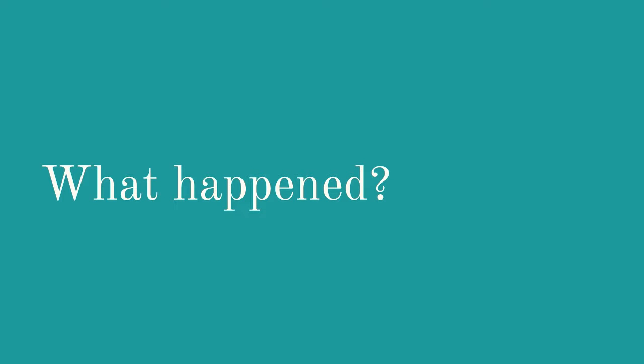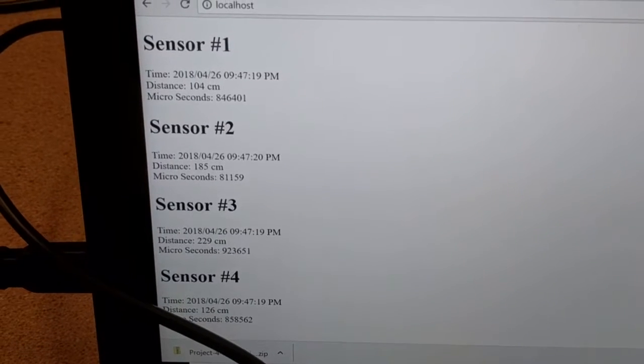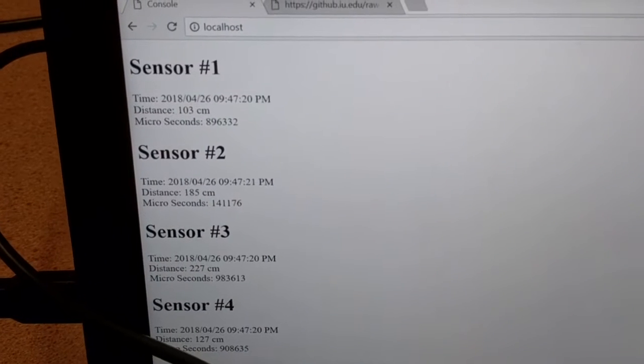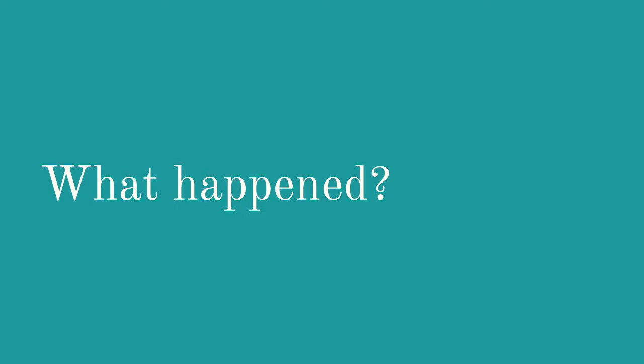At the Python server, we have two different tasks running. We have a task running which is a web interface, and we have a task running on the Python server that is strictly checking for UDP connections, seeing the JSON objects come in, and storing them into a database — an SQL database.